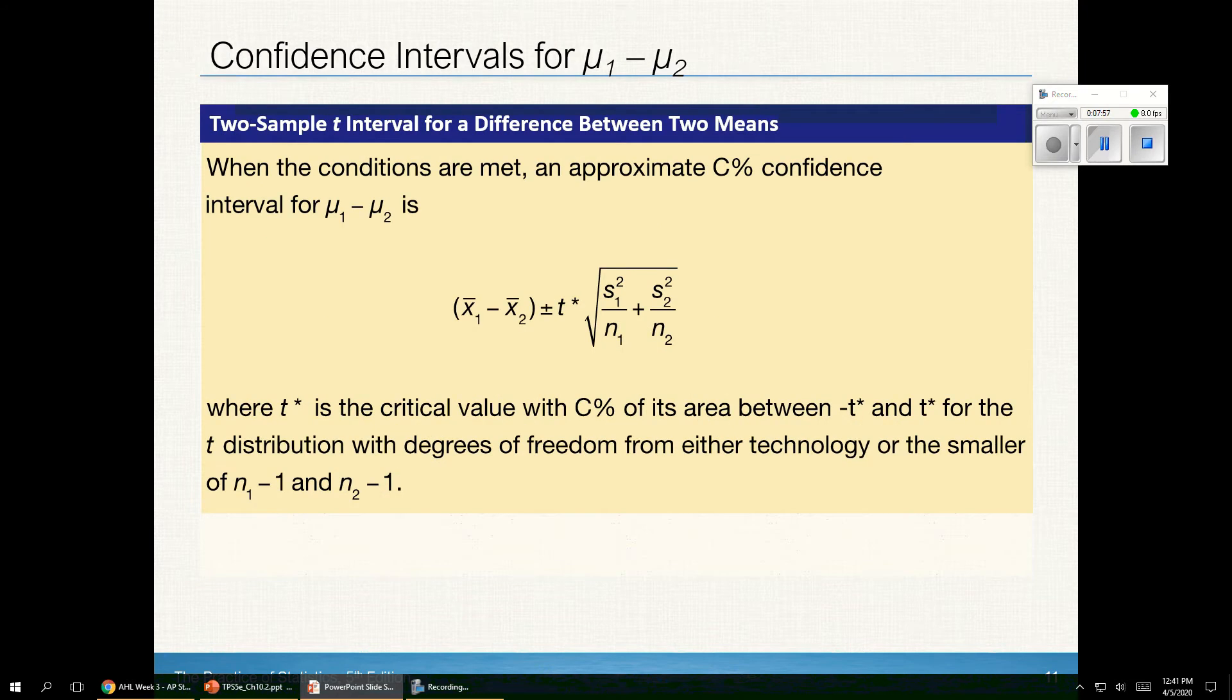Confidence intervals are found similarly. x-bar 1 minus x-bar 2 is the statistic, plus or minus a critical value. It's a t-star critical value. And then the standard error of the estimate right here. I can use my t-star from the calculator or from some sort of technology, or I could use the conservative degrees of freedom and use my chart.